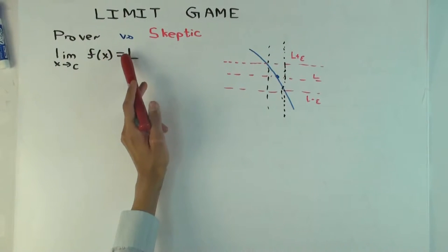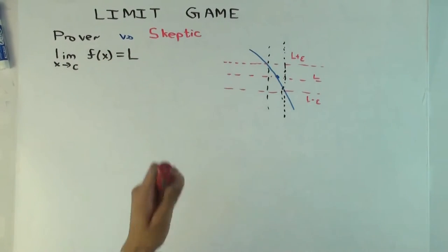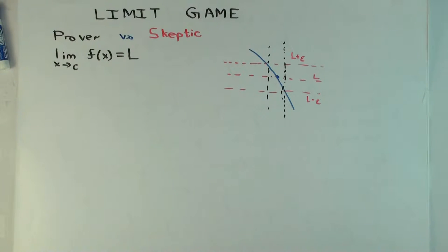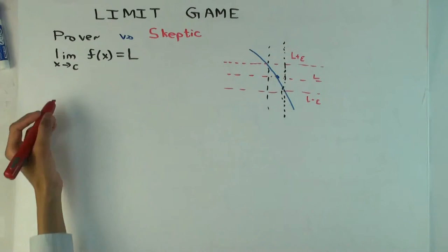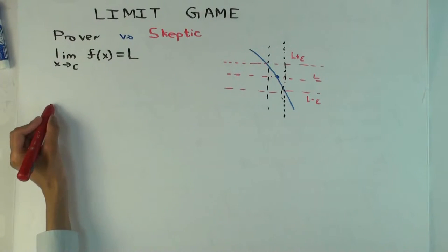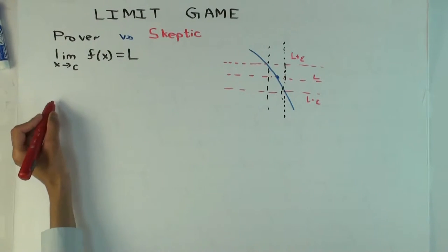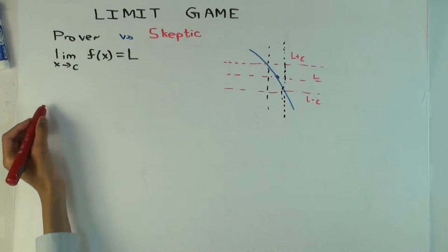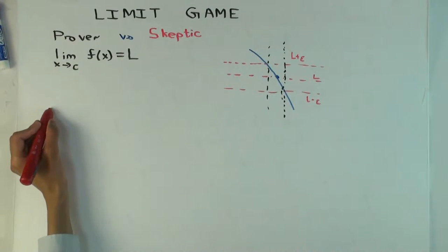The way the game is structured is as follows. I'll go over the individual components of the statement for the limit, explain the game, and then explain how it corresponds to the definition you've seen.